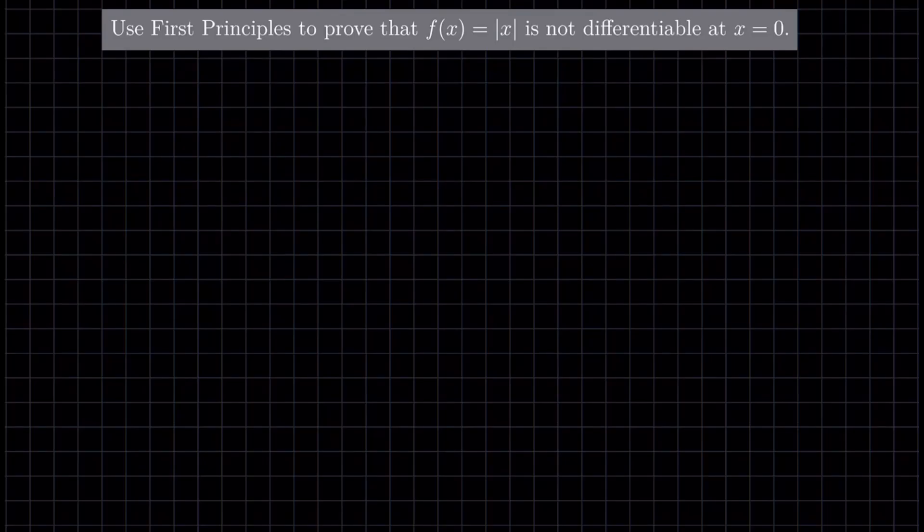Here's a nice exercise that I usually do with my class when we first start the topic of calculus. It says, use first principles to prove that f(x), which is equal to the absolute value of x, is not differentiable at x equal to 0.